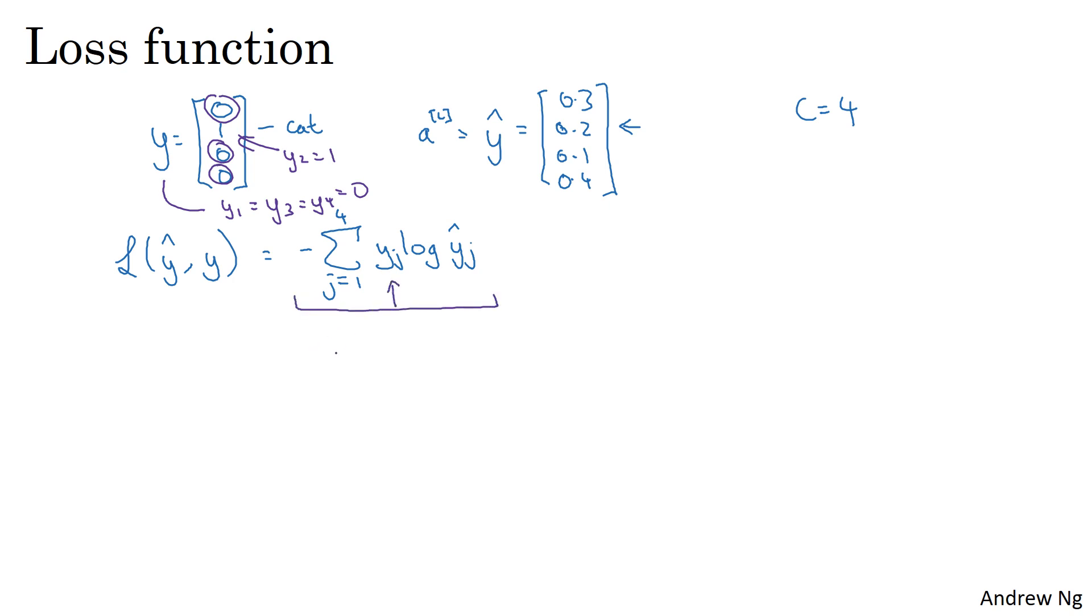So if you look at this summation, all the terms with 0 values of yj will equal 0, and the only term you're left with is negative y2 log y hat 2, because when you sum over the indices of j, all the terms will end up 0 except when j is equal to 2. And because y2 is equal to 1, this is just negative log y hat 2. So what this means is that if your learning algorithm is trying to make this small, because you use gradient descent to try to reduce the loss on your training set, then the only way to make this small is to make y hat 2 as big as possible.